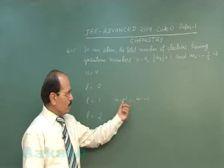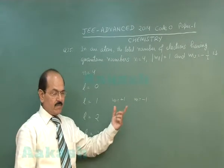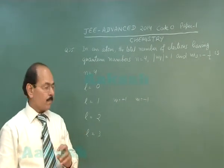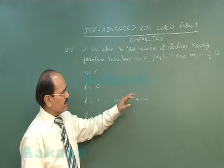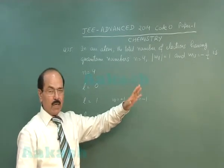These are 2 orbitals, and each orbital can have 2 electrons. One of them will have the spin quantum number minus half.